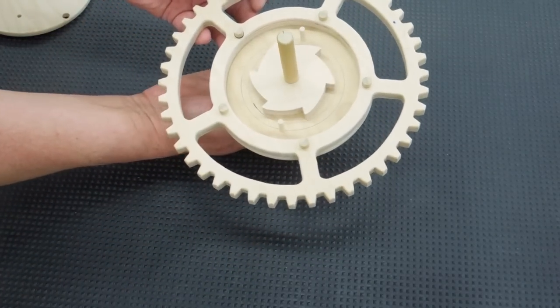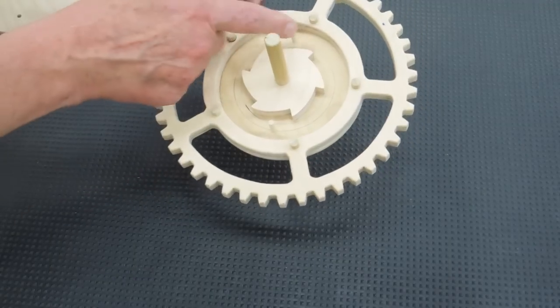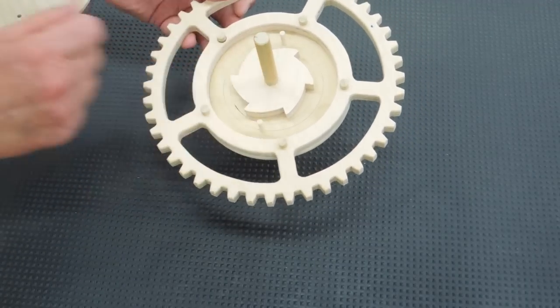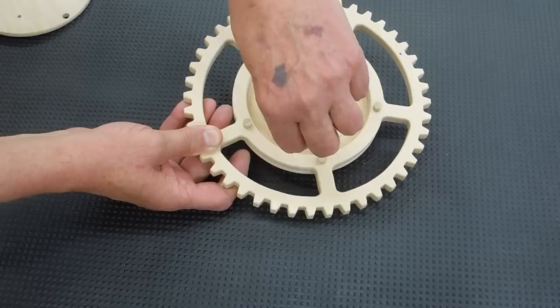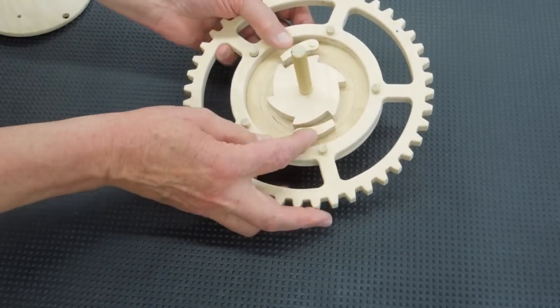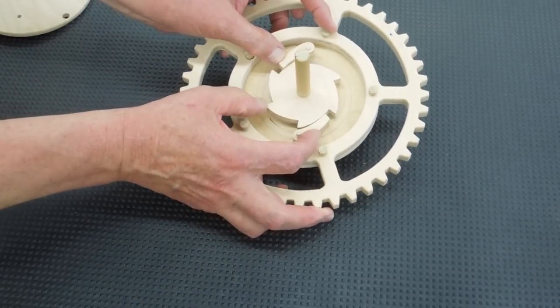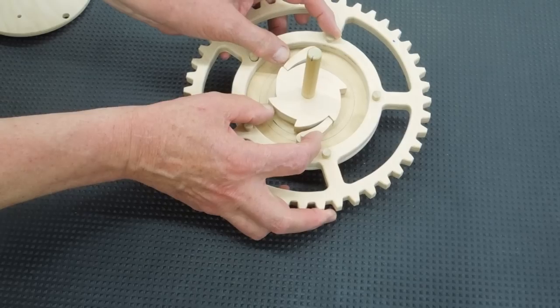The ratchet will now turn in the center and we need a couple of pawls to engage with the teeth on the ratchet, one at the top, one at the bottom, which will allow this to turn in one direction but not in another.